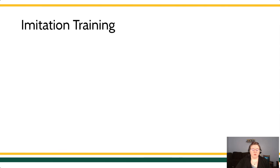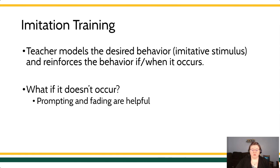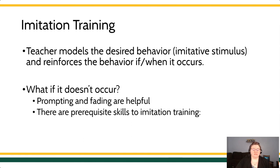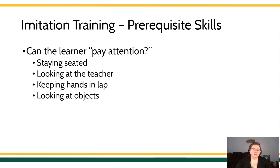In imitation training, remember that the teacher models the desired behavior — the imitative stimulus — and reinforces it when it occurs. If it doesn't occur, prompting and fading are really helpful, but there are some prerequisite skills that you have to check before you try to use imitation training. The most important prerequisite skill is really the ability — the capacity — to pay attention. In order to use imitation training effectively, we recommend that a person can stay seated or at least look at us long enough to potentially see the imitative stimulus. A person has to have the ability to be calm for a moment to take that in, and they have to be able to direct their looking behavior to different objects. If your learner is not doing a lot of these prerequisites, don't try to use imitation training — they're not going to see your imitative stimulus and thus it's not going to be effective.